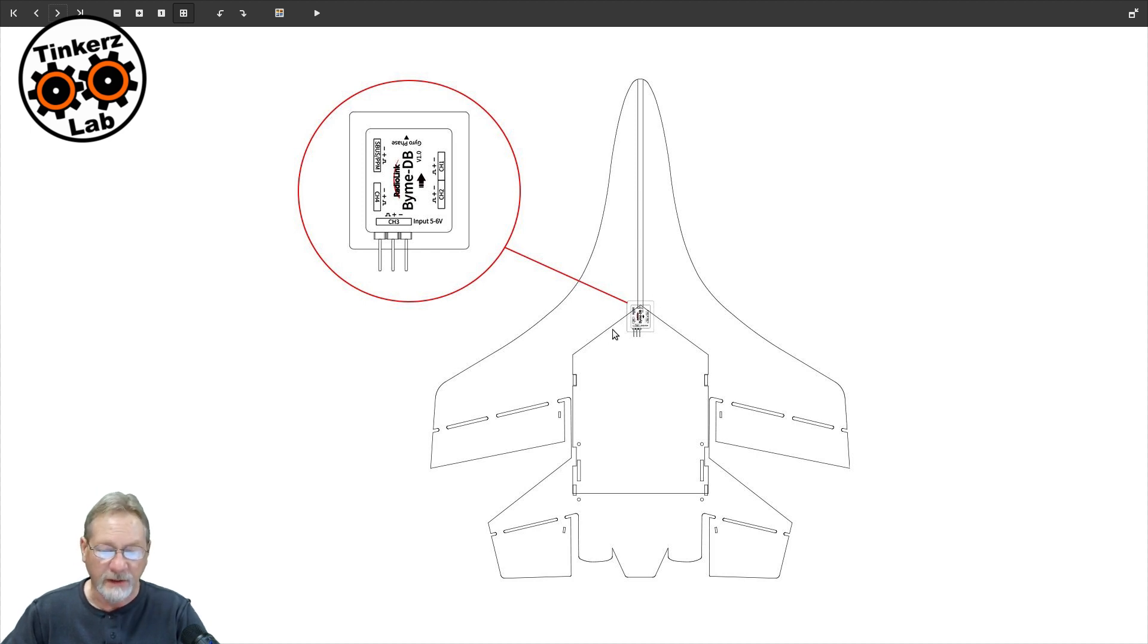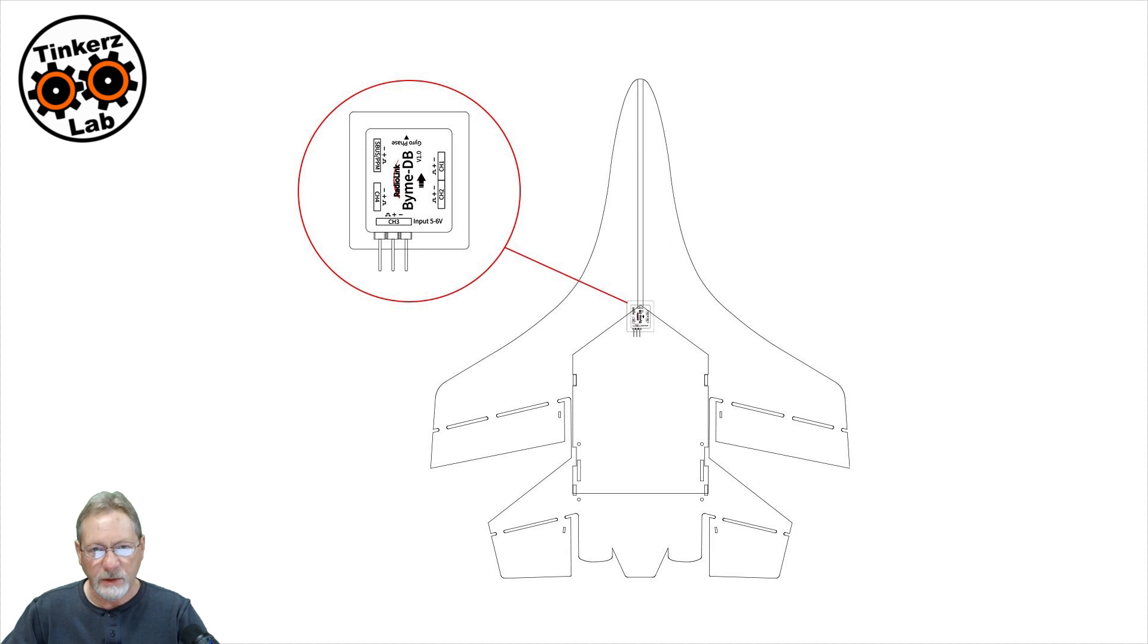All right, here it shows an outline of the airframe and where it needs, where it should be mounted. It doesn't have to be mounted there, but I always prefer to mount my gyro in the center of the airframe, right at the pivot point for roll, pitch, and yaw. That's where I like to put it.